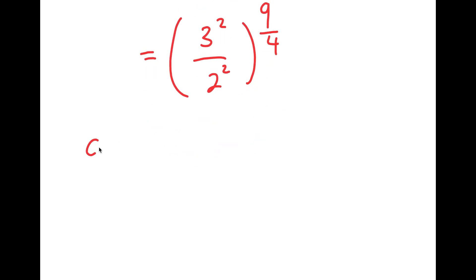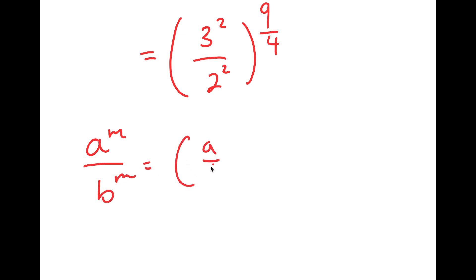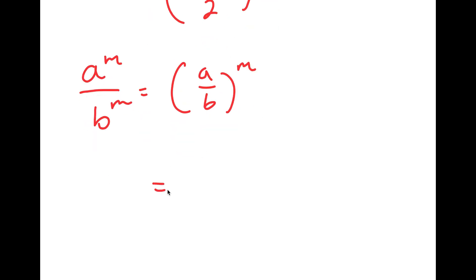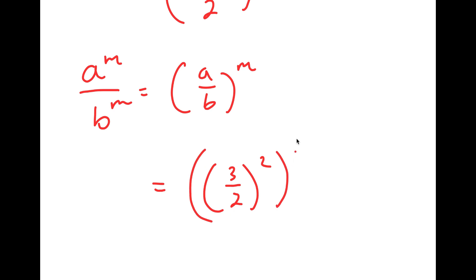If I have something in the form a to the power of m over b to the power of m, this is equal to a over b to the power of m. So 3 squared over 2 squared is going to equal 3 over 2 squared, and I still have this to the power of 9 over 4.